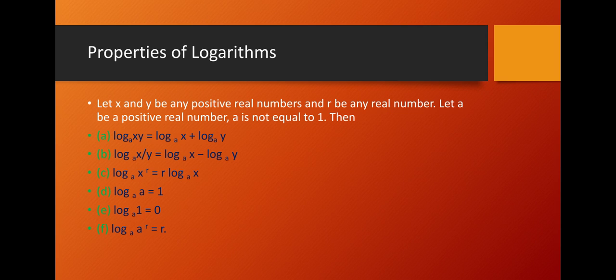The second property is: if two numbers are dividing, we can subtract their logarithms separately — log base a of (x/y) equals log base a of x minus log base a of y. The third property is: log base a of x raised to power r means the power becomes the coefficient, written as r·log base a of x. If the logarithm has the same base as its argument, its value equals 1. And log base a of 1 equals 0.